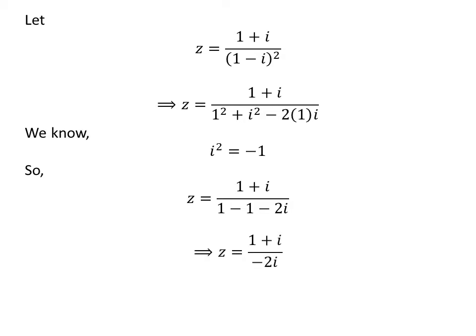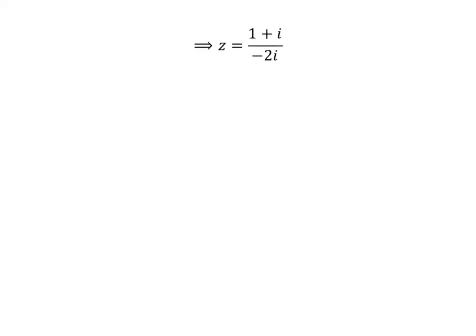Further simplification gives us z is equal to 1 plus i upon minus 2 times i. As multiplying the numerator and denominator by a common factor does not change the value of the fraction, let us multiply the numerator and denominator of the above fraction by minus 2 times i. So z is equal to 1 plus i times minus 2 times i upon square of minus 2 times i.